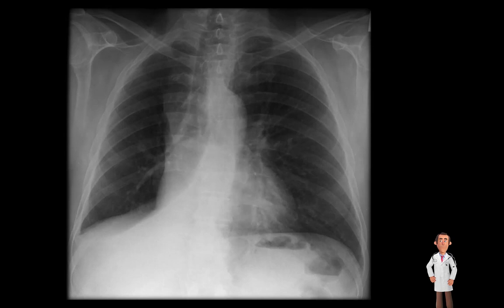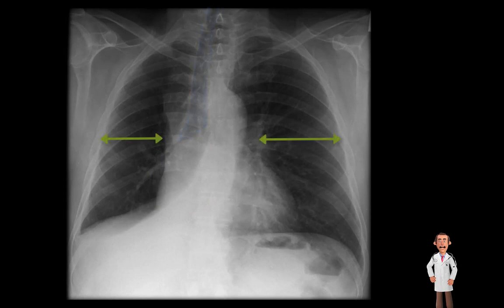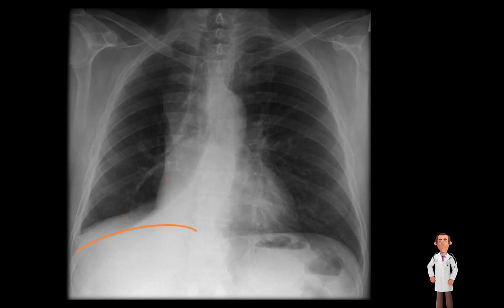Case one. What's immediately obvious is that there is an abnormality in the right lung field. Moving on to our systematic approach: the airway is deviated towards the side of the abnormality. The lung fields are asymmetrical with a size reduction in the right lung compared to the left. In addition there is a triangular opacity in the right lower lung with absent lung markings. The outline of the right hemidiaphragm is completely obliterated and the right heart border and mediastinum are shifted towards the right.